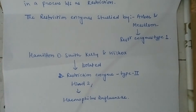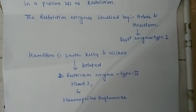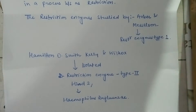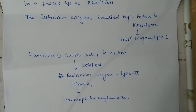On the basis of their structure, restriction enzymes are classified into 4 types: Type 1, Type 2, Type 3, and Type 4. In order to cut DNA, all these restriction enzymes — whether Type 1, 2, 3, or 4 — make 2 incisions, once through each sugar-phosphate backbone of the DNA double helix.